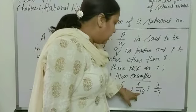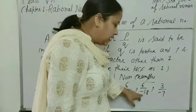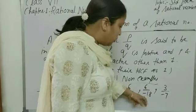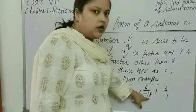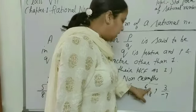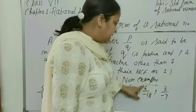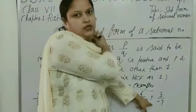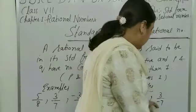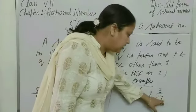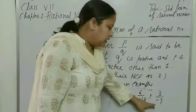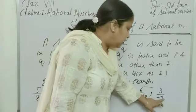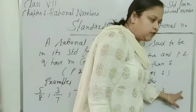Next is 6 upon minus 18. The denominator is minus 18, which is negative. Also, 6 and 18 are not coprime. Therefore, 6 upon minus 18 is not a Rational Number in Standard Form. Next, 3 upon minus 7 — here the denominator is minus 7, which is negative. Therefore, 3 upon minus 7 is also not a Rational Number in Standard Form.